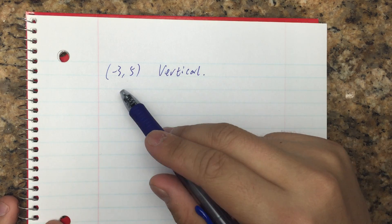This question asks to find a vertical line passing through the point (-3, 5).